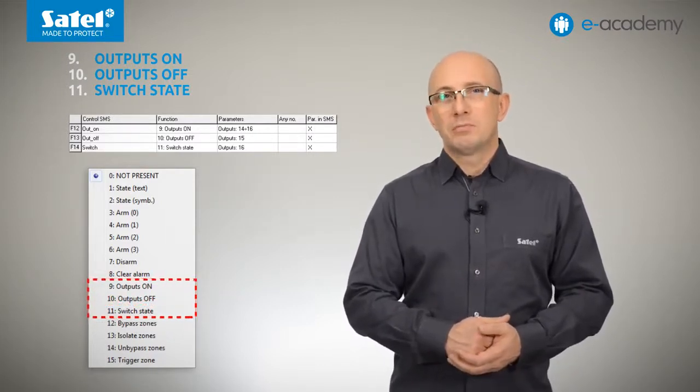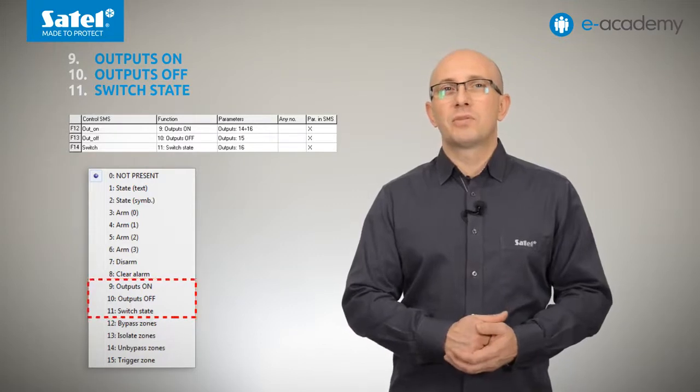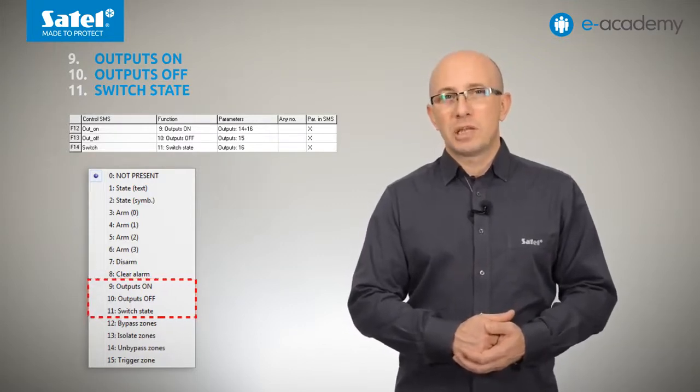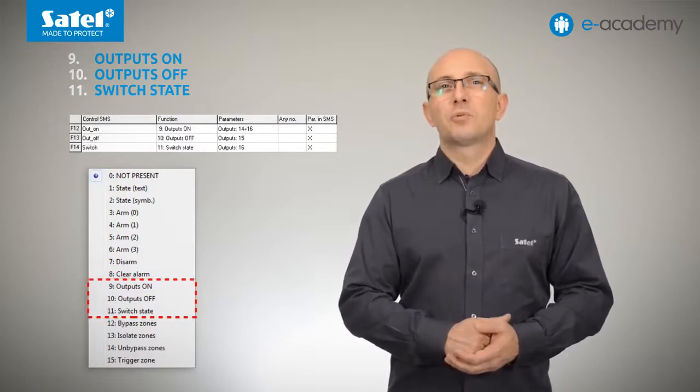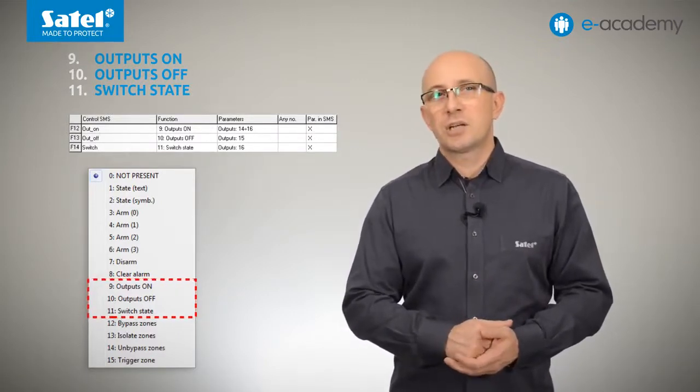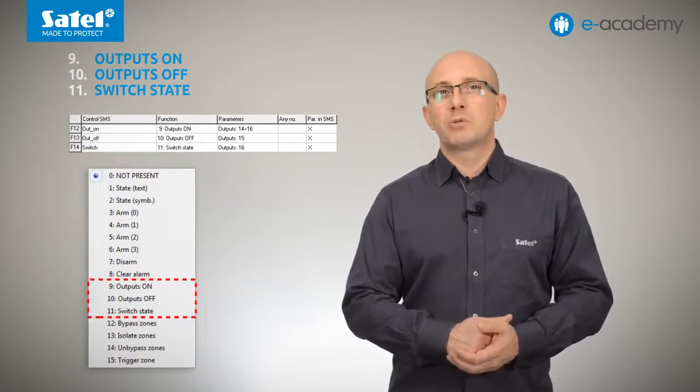For individual commands, you can assign outputs individually or in groups, thus becoming able to control the devices connected to them as may be needed. This works well when controlling gates, roller shutters, lighting, sprinklers or other building automation devices.